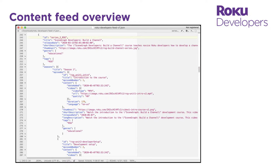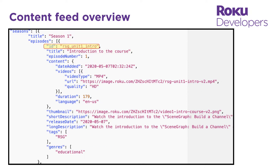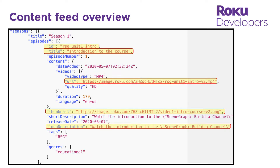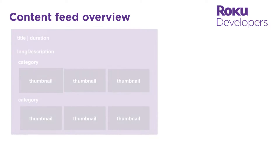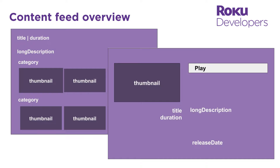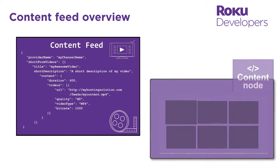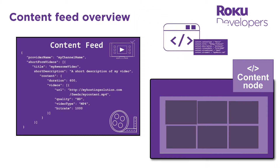Each entry contains a series of metadata fields that describe the content. This includes the unique ID, name, description, thumbnail image, and URL. You will use this metadata to add content to your channel's UI. For example, when you are developing the channel's home and details pages, you will get the thumbnail images, titles, and other relevant metadata from the feed and use it to populate a grid, list, or panel.